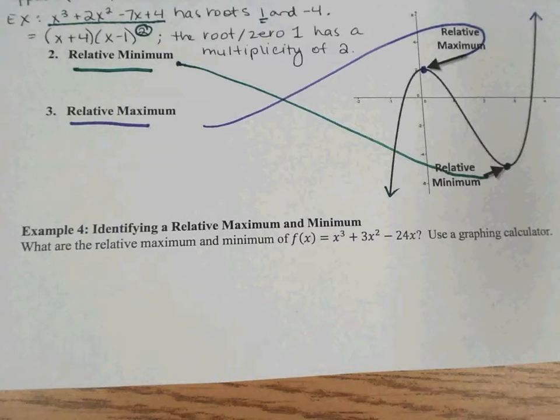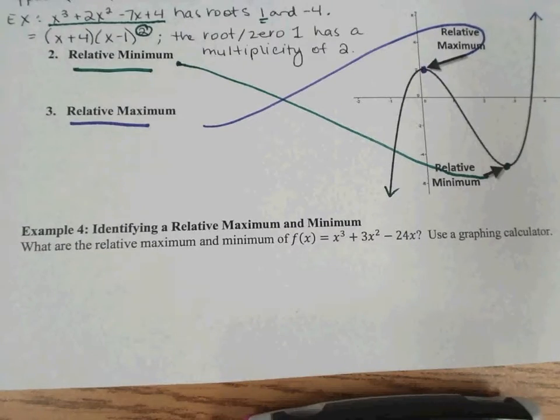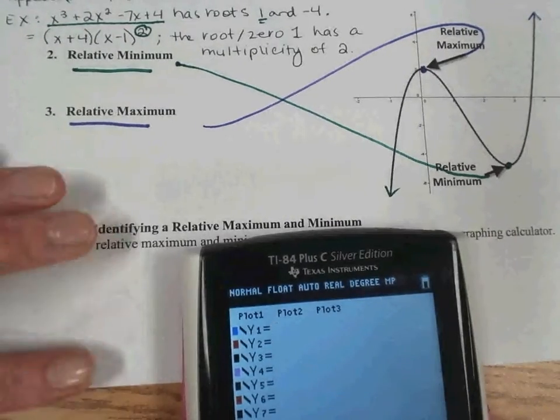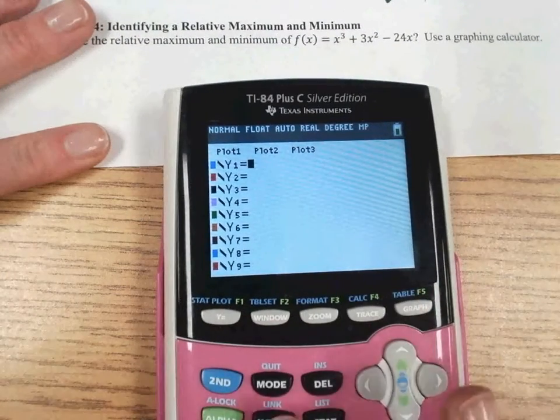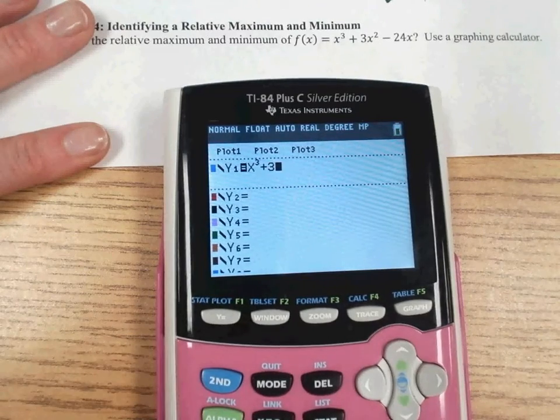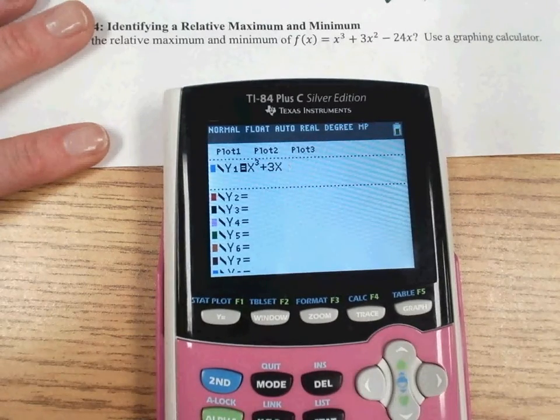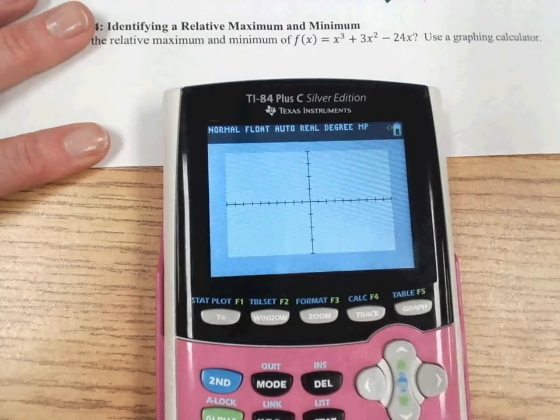Example 4, identifying a relative maximum and minimum. So to do this, we're actually going to use the graphing calculator again. And you can clear out whatever is in there for y equals. Go to y equals, and then enter in x cubed, plus 3x squared, minus 24x, and hit graph.